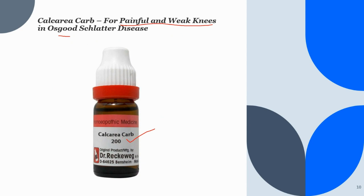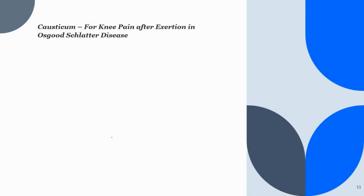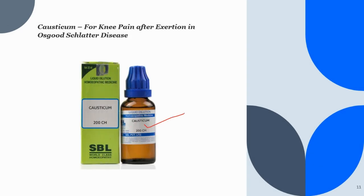The second medicine is Causticum, indicated for managing knee pain that arises after exertion in Osgood-Schlatter disease. It is attended with the sensation that the tendons of the knee are too short. The knee feels stiff upon walking, there is a crackling sensation in the knees while walking, and a drawing feeling in the knee may extend down to the feet.